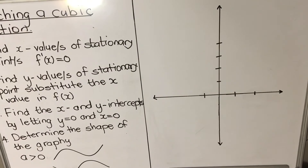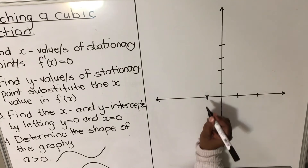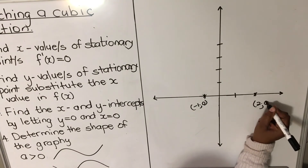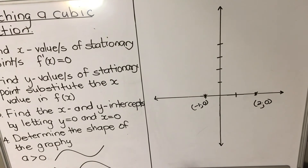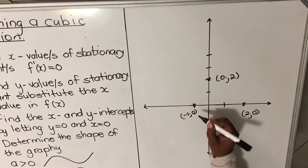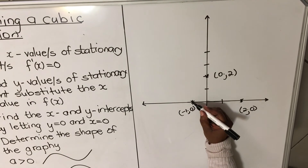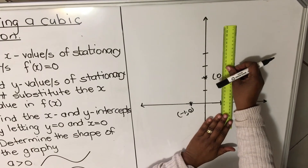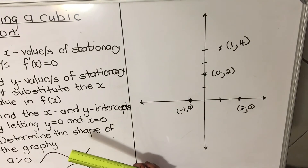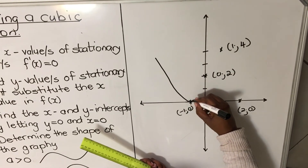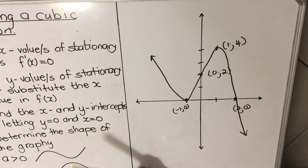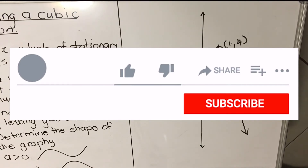Now we're ready to draw the graph. Plot the intercepts: (-1, 0) and (2, 0) on the x-axis, and the y-intercept (0, 2). Plot the turning points: (-1, 0) and (1, 4). Since a is negative, the graph starts up, passes through the turning point at (1, 4), crosses the y-axis, comes down through (-1, 0), and goes back up to (2, 0). Practice this — it's not hard!